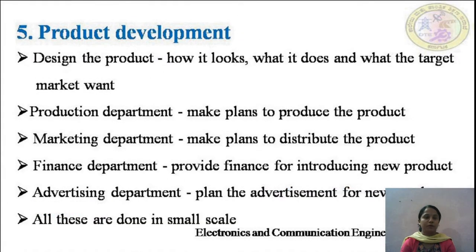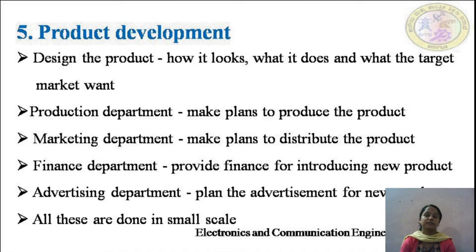The fifth stage is product development. Here, the product is designed, produced, marketed, financed, and advertised. Designing covers how it should look, what it should do, and what the target market wants. The production department plans to produce the product, the marketing department plans distribution, the finance department provides funding, and the advertising department plans advertisements for the new product. All these departments work initially on a smaller scale.